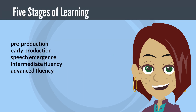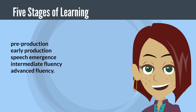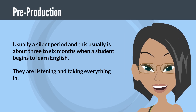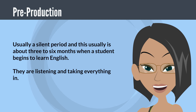There are five stages of learning: pre-production, early production, speech emergence, intermediate fluency, and advanced fluency. Pre-production is usually a silent period that lasts about three to six months when a student begins to learn English. They are listening and taking everything in.